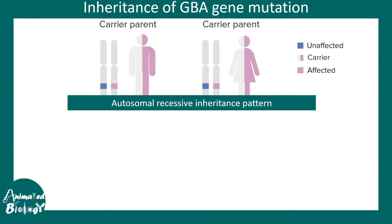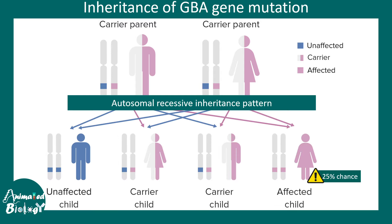The inheritance pattern of the GBA gene mutation is autosomal recessive, meaning there is a 25% chance that a child would be affected in the next generation. Both alleles have to be mutated in order for the child to develop this disease.